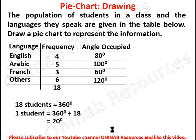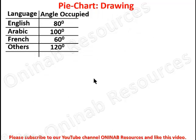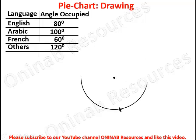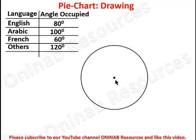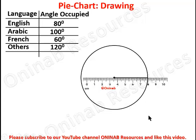We are now going to draw a circle. We open a convenient radius on our pair of compasses, take a point as a center, and draw a circle. Having drawn the circle, we identify the center and place our ruler to draw the radius of the circle.